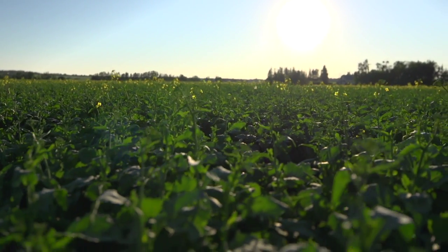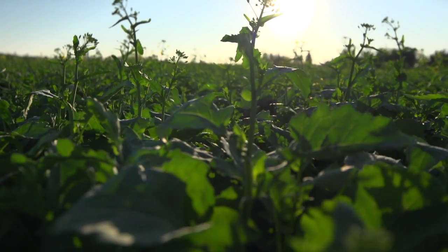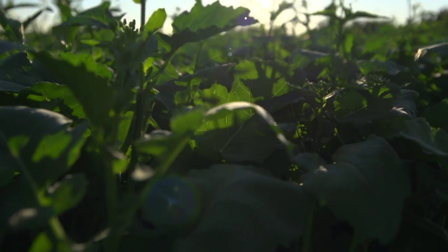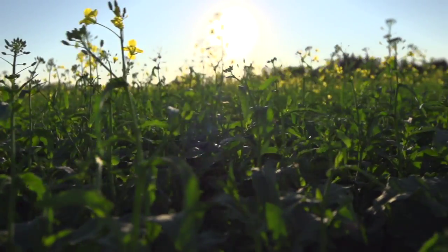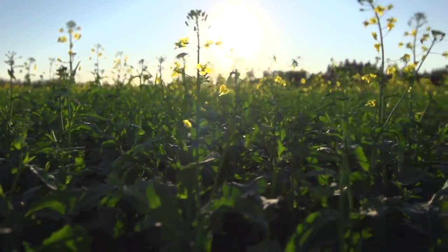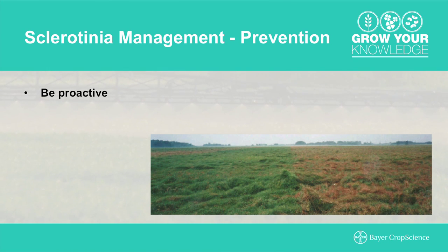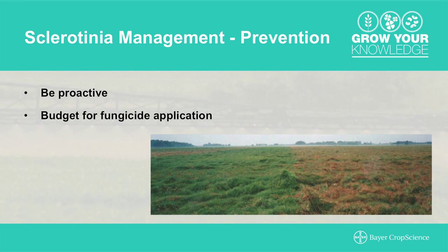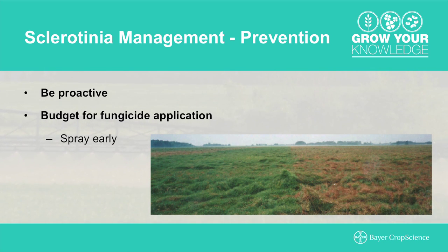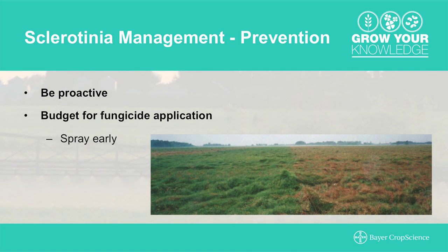Even starting fresh on a field that has never seen canola before, you still need to understand that there are risks with this disease — it goes back to what's been growing close by. In one experience, on a field where canola had never been grown before, all the surrounding fields the previous year had canola, and we still experienced up to 10% incidence even with no past history in that field. When managing sclerotinia in canola, you need to be very proactive. If you're planning on growing a good aggressive canola crop, budget for a fungicide application like Proline and stay in front of it. Once you see the symptoms, it's already too late.